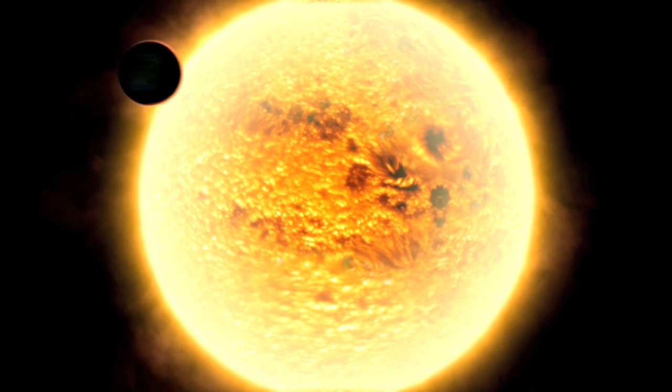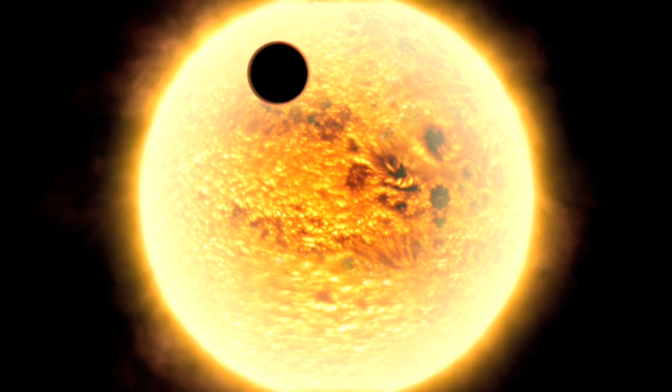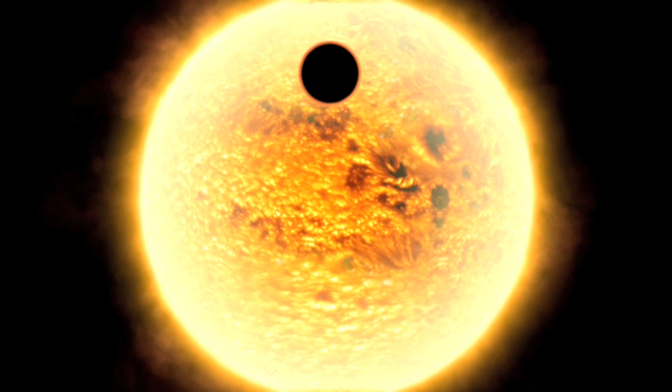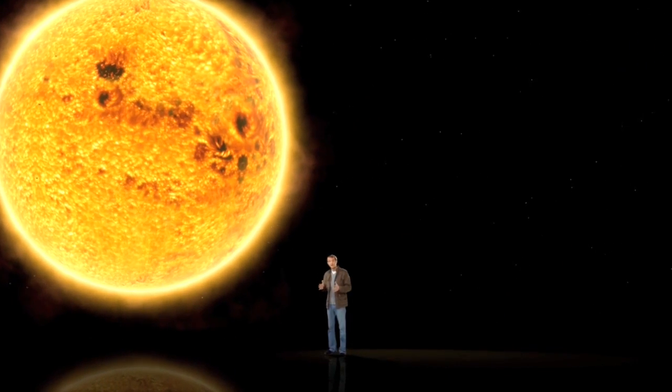When that happens, some small fraction of the light from the star has to pass through the atmosphere of the planet in front of it in order to reach Earth. Because of this process, the composition of the atmosphere of the planet is stamped onto the light like a unique fingerprint.